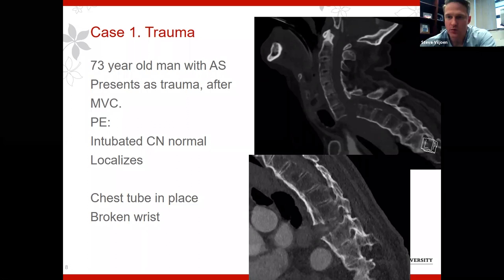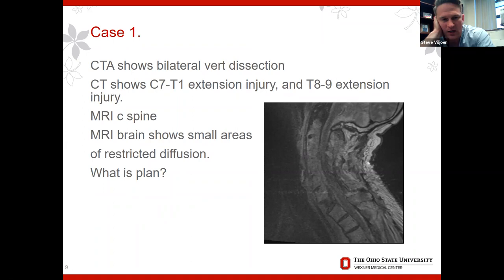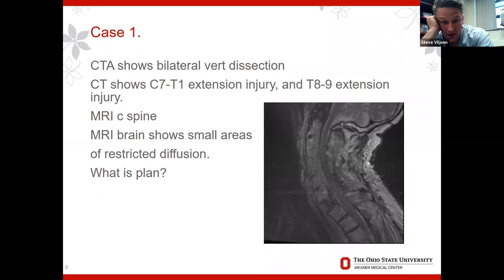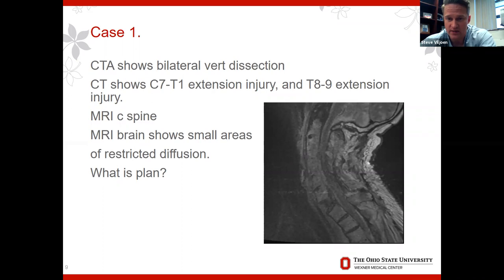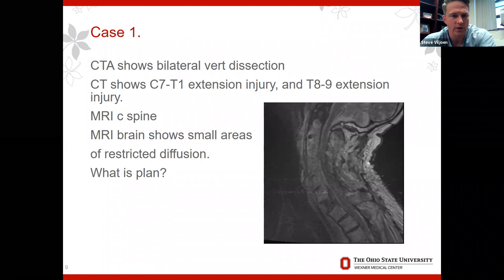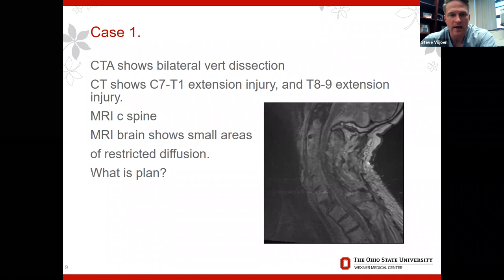This patient had bilateral vertebral artery dissections, was started on antiplatelet medication. The CT showed a significant C7-T1 extension injury as well as T8-9. The MRI was poor quality but confirmed an unstable injury. A brain scan showed a few small restricted diffusion hits from the dissection. So for the panel: the patient is yours — how do we handle this? All in one sitting? Address both fractures? Do the neck first and bring him back?